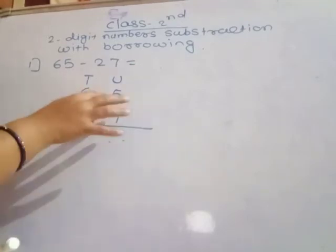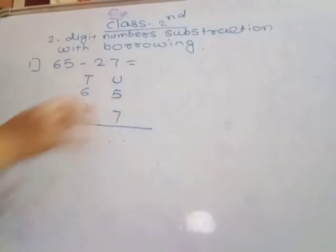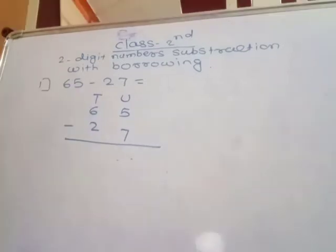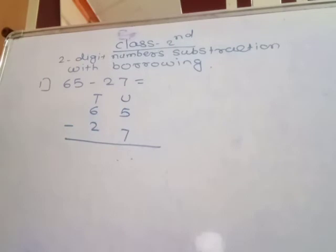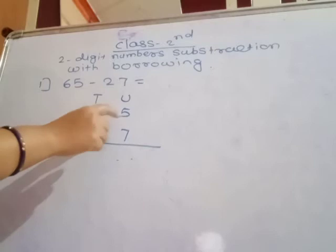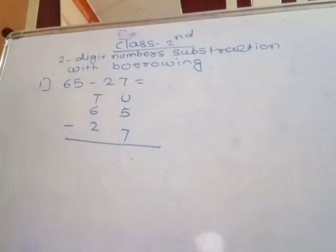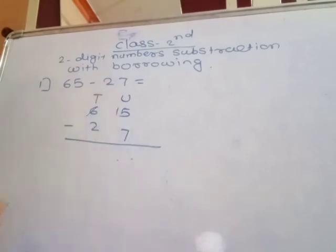For the unit place, you subtract 7 from 5. But 5 is a small number, so it is not possible to subtract 7 from 5. Then you borrow one number from the tens place, making it 15. You put that one here and write the remaining digit.